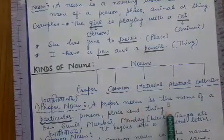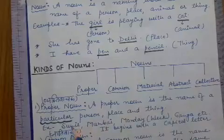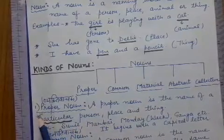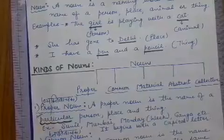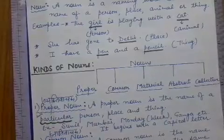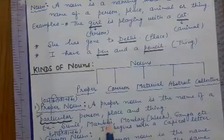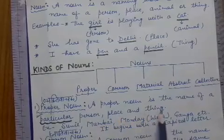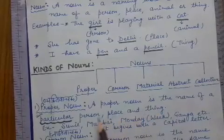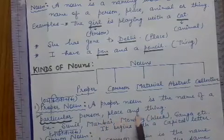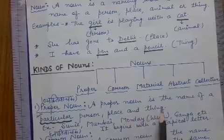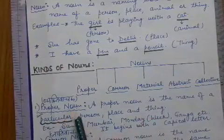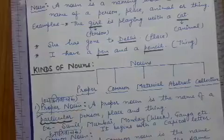The first one is proper noun. Proper noun is the name of a particular person, place, or thing. Here, 'particular' is very important. Particular means — jab hum kisi bhi vyakti ko, kisi bhi jagah ko, ya kisi vastu ko koi special naam dete hain, tab woh kya ban jaata hai? Proper noun.